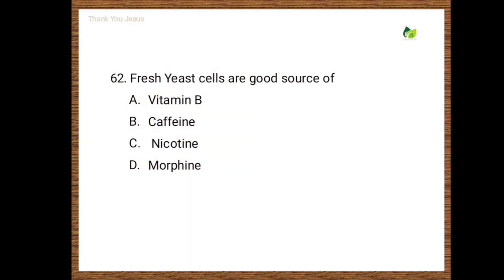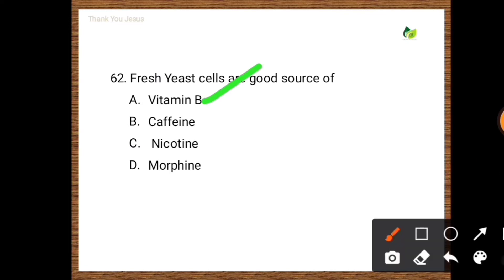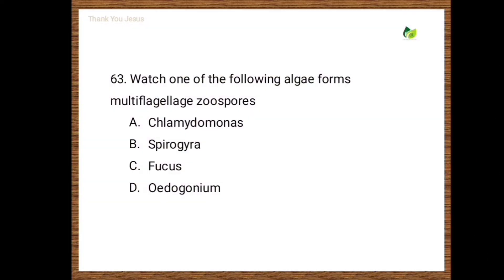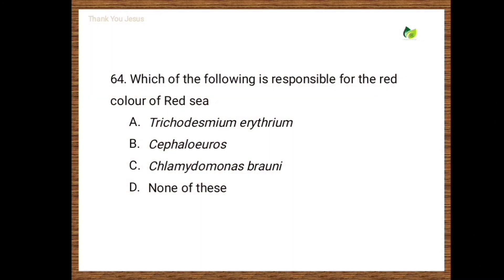Next question: Fresh yeast cells are a good source of — options are vitamin B, caffeine, nicotine, morphine. Correct option is vitamin B. Next question: Which one of the following algae forms multiflagellate zoospores? Options are Chlamydomonas, Spirogyra, Fucus, Oedogonium. The correct option is Oedogonium.